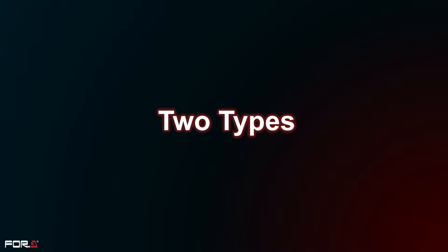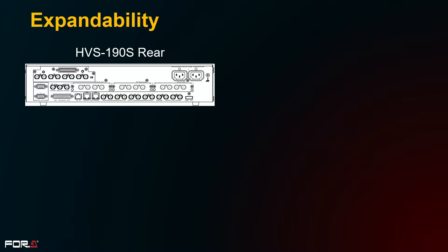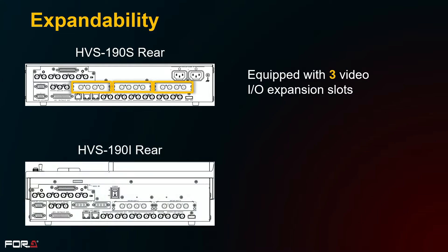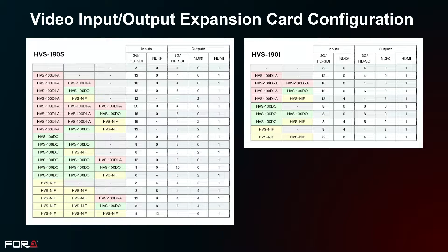The HVS 190 series with its compact housing is available in two types: with a separate control panel or with an integrated panel. Both have eight inputs and five outputs as standard. The HVS 190 S with a separate panel can be equipped with up to three optional IO boards, while the HVS 190 I with an integrated panel can be equipped with up to two optional IO boards. For example, the HVS 190 S can be expanded to 20 inputs and 11 outputs when three HVS NIF boards are installed. Information on the configuration of the video input/output expansion board for each model is also available on our website.